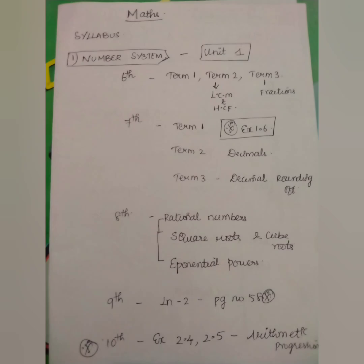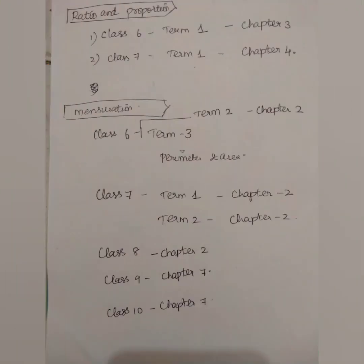The ratio and proportion — in the ratio and proportion, I will tell you how to analyze the school book. There are two books in class 6: term 1, chapter 3; class 7, term 1, chapter 4. If you look at the mensuration, I will tell you. I will tell you the measurements — this is class 6 and 10 books.